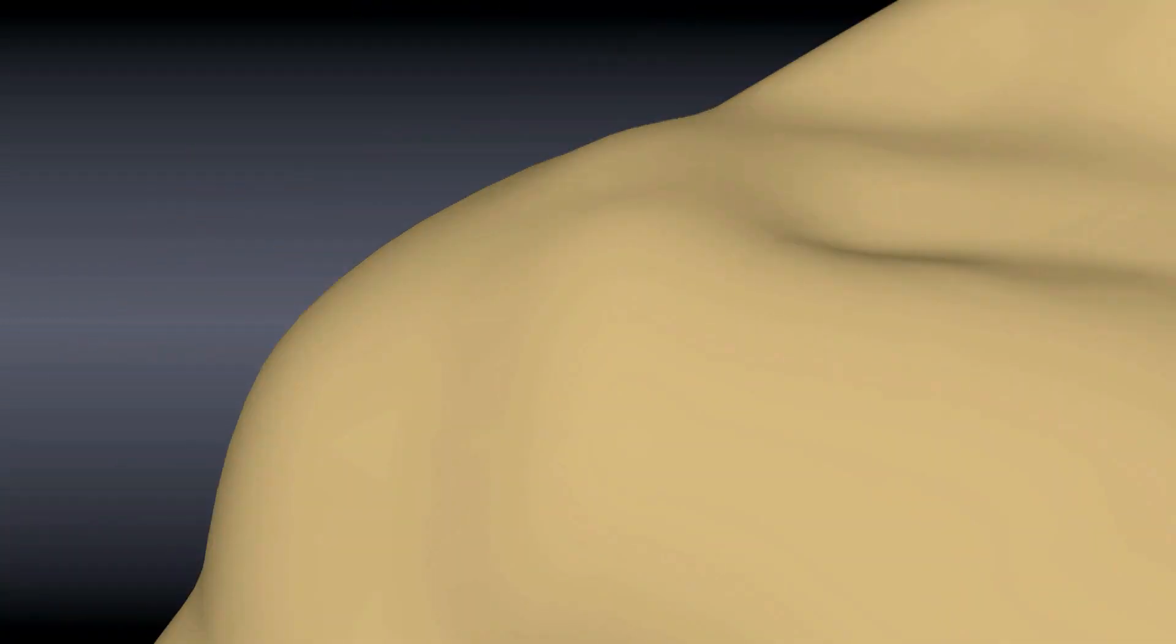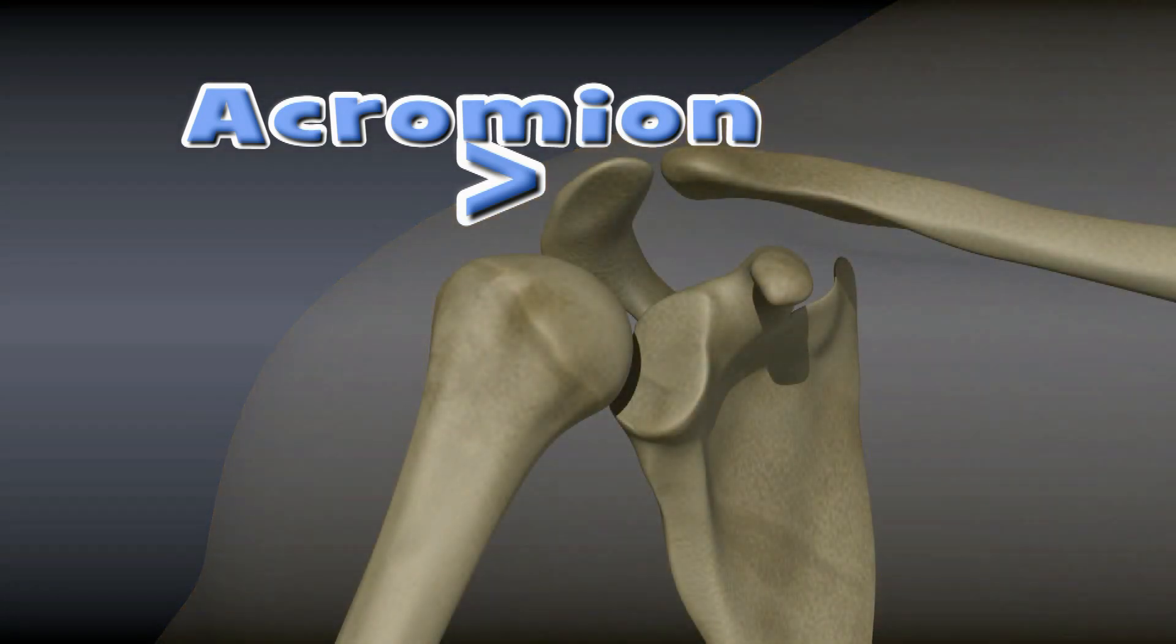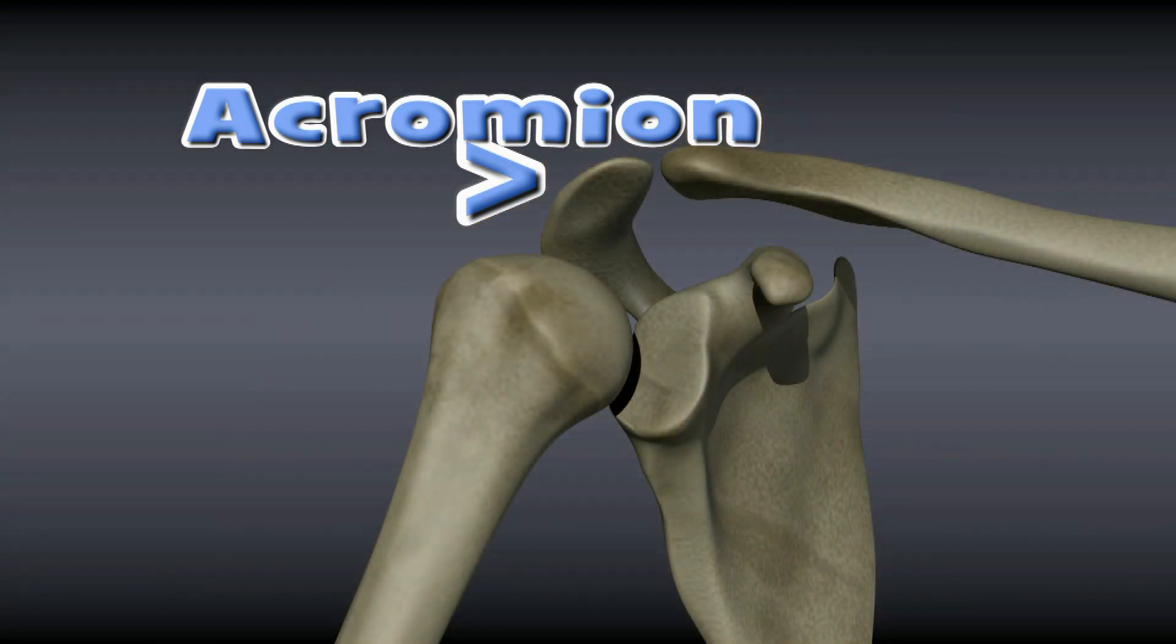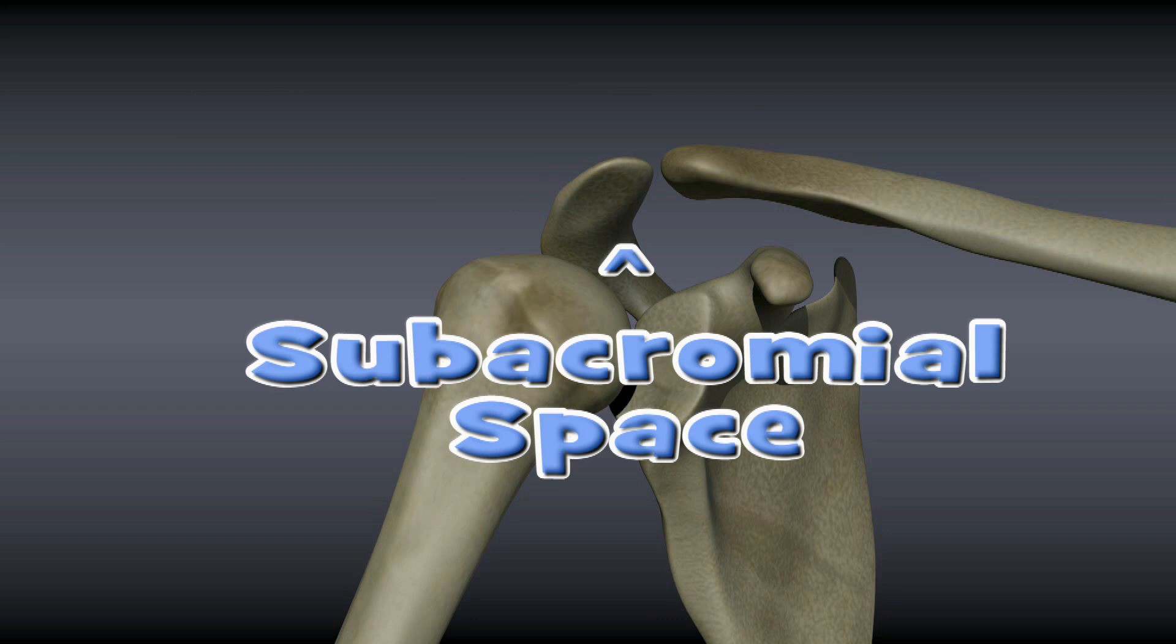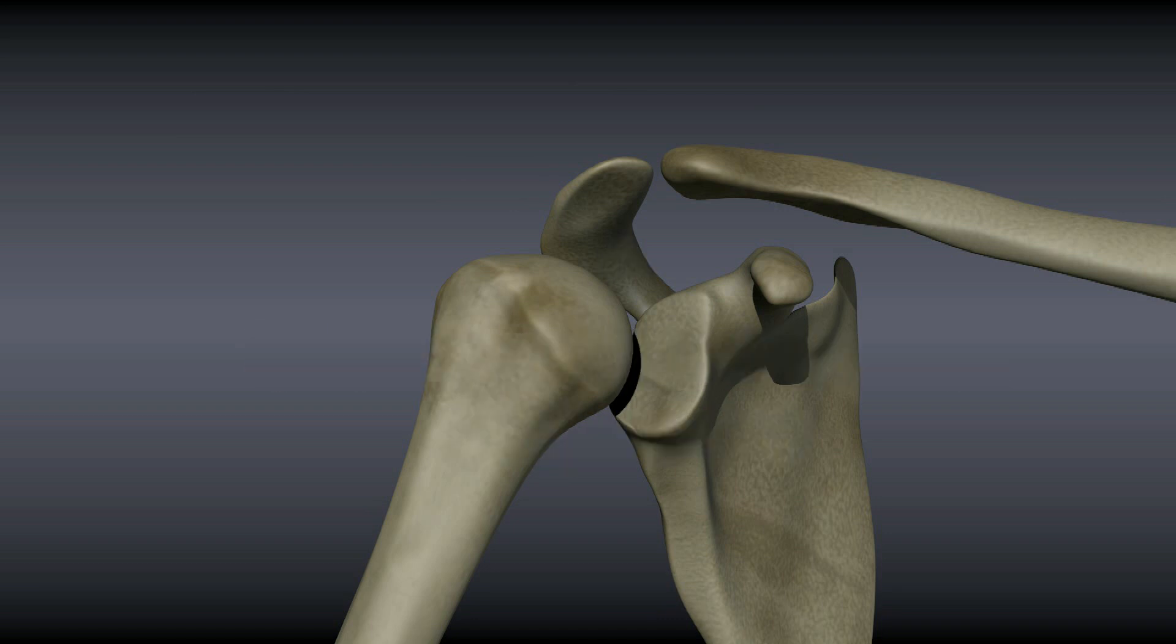The acromion is a bony appendage off the scapula or shoulder blade. Subacromial means beneath the acromion. The subacromial space is where the tendons of the rotator cuff pass before they attach to the humerus, the large bone of the upper arm.